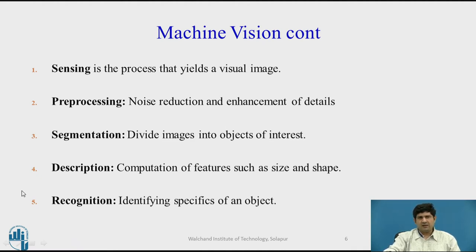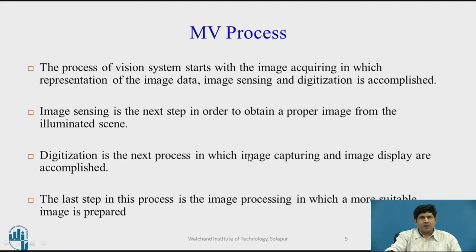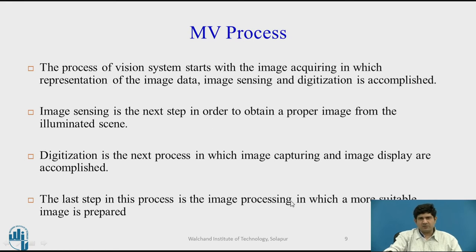This is a part of image processing, image analysis, and related tasks. I use the term image processing to indicate the many things you do with an image using a computer. Textbooks on image processing have their own vocabulary and nomenclature as to what should be called image processing, what is image analysis, and so on. The process of a vision system actually starts with image acquisition, in which representation of the image data and digitization is accomplished — obviously done with the camera. Image sensing is the next step to obtain a proper image from the scene. Then we digitize that image, and in the last step, image processing prepares a more suitable image.